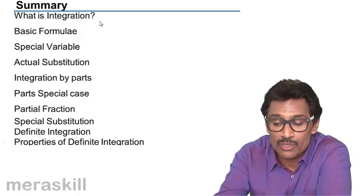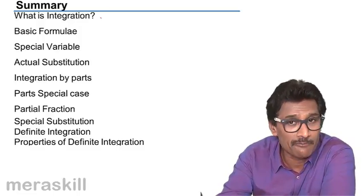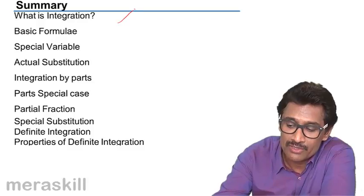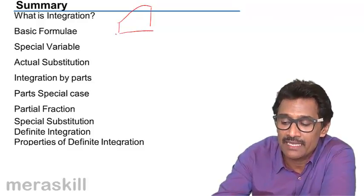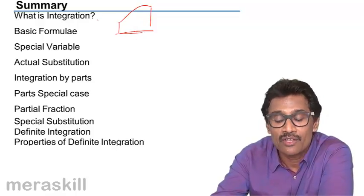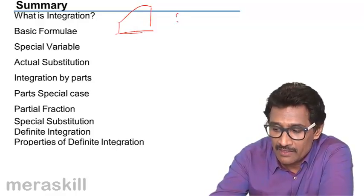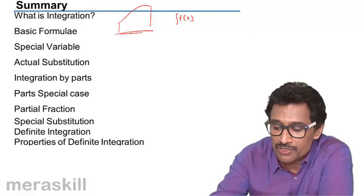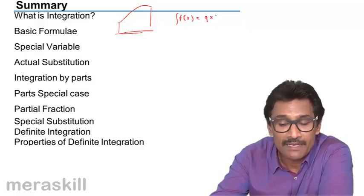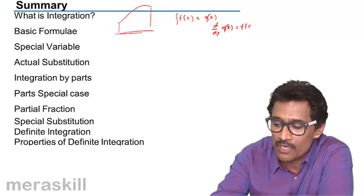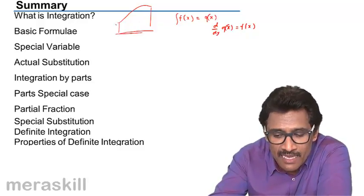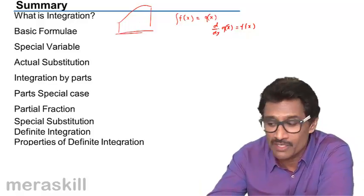We discussed what integration was. We took two approaches: one is viewing it as a curve and finding the area between the curve and the x-axis, called integration. We also said that if the integral of a function is g of x, then d by dx of g of x is nothing but f of x. This was highlighted well in the last example we did.